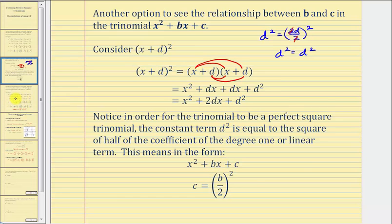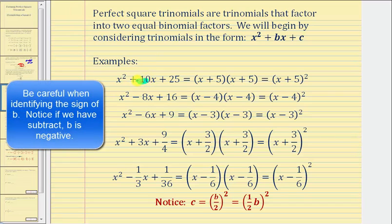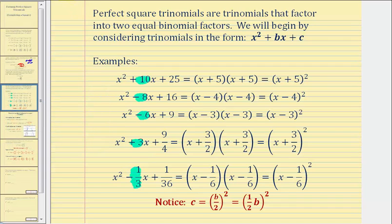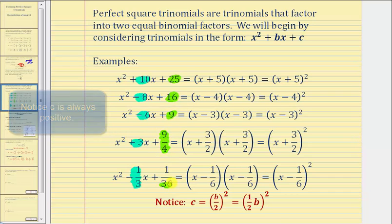Going back to our five examples, in each trinomial the constant term c equals (b divided by 2) squared. We can also write this as c equals one-half times b, all squared. Identifying the values: b equals 10, negative eight, negative six, three, and negative one-third; and c equals 25, 16, nine, nine-fourths, and one thirty-sixth respectively.